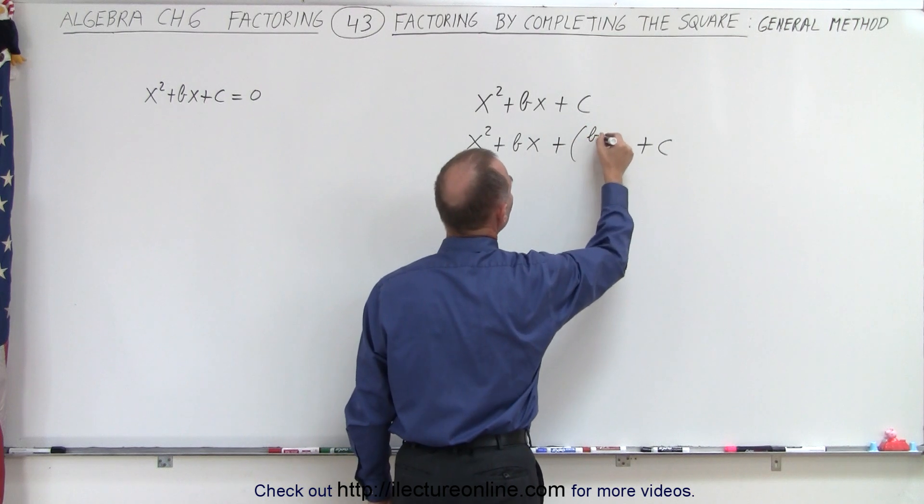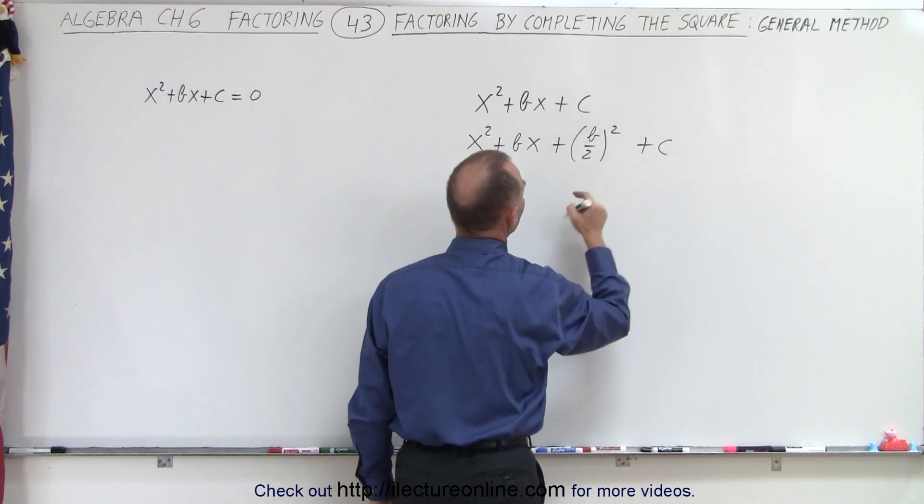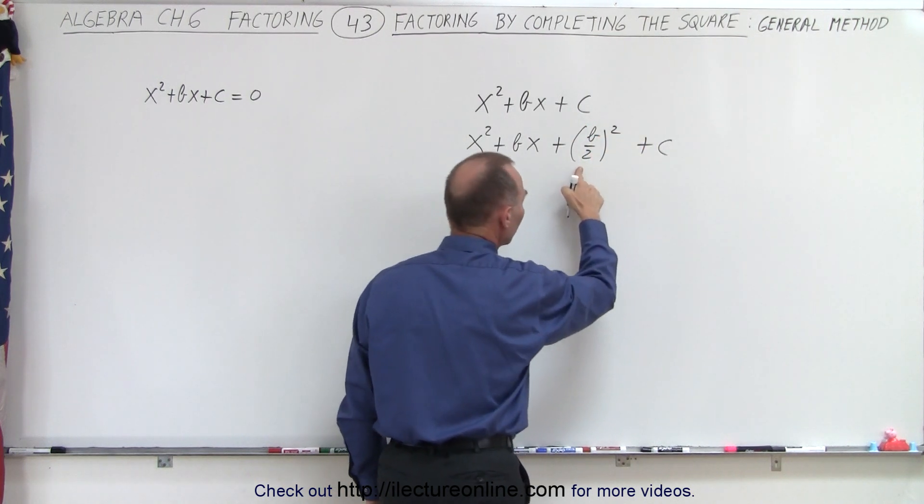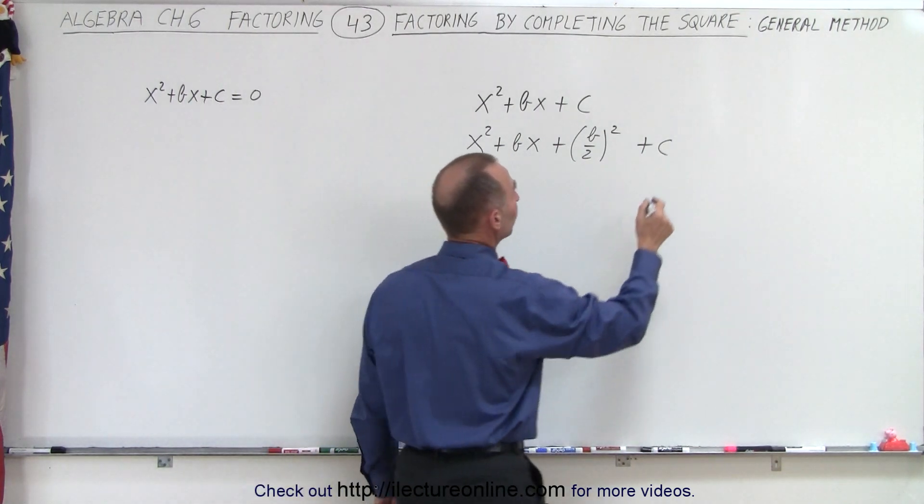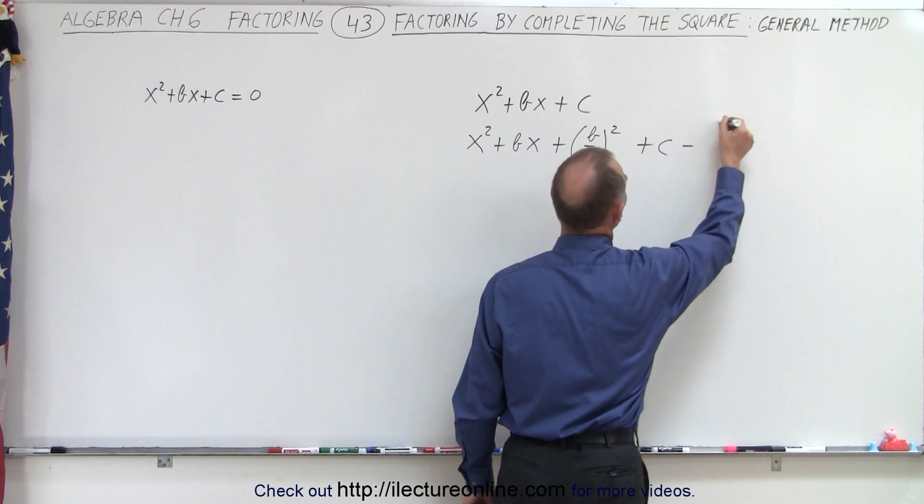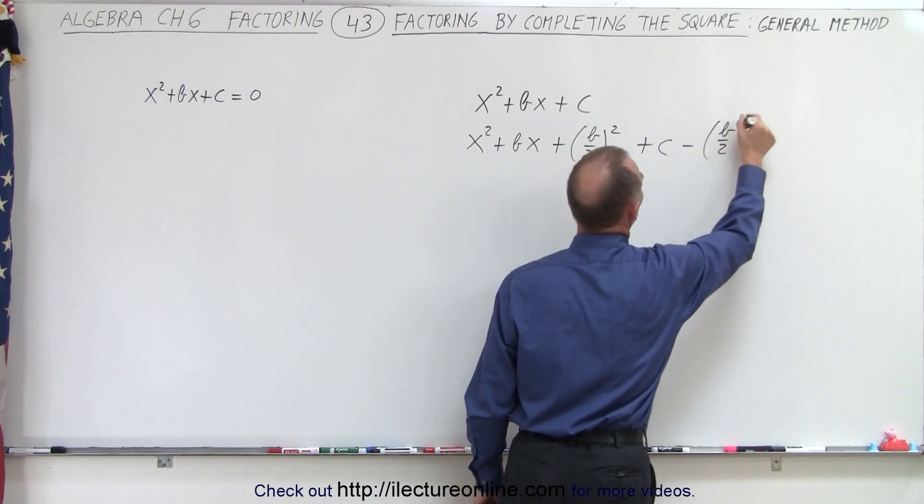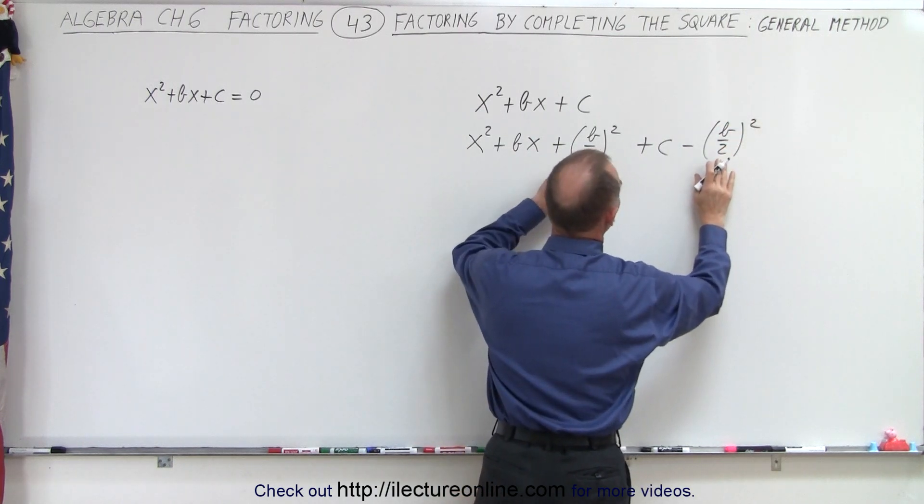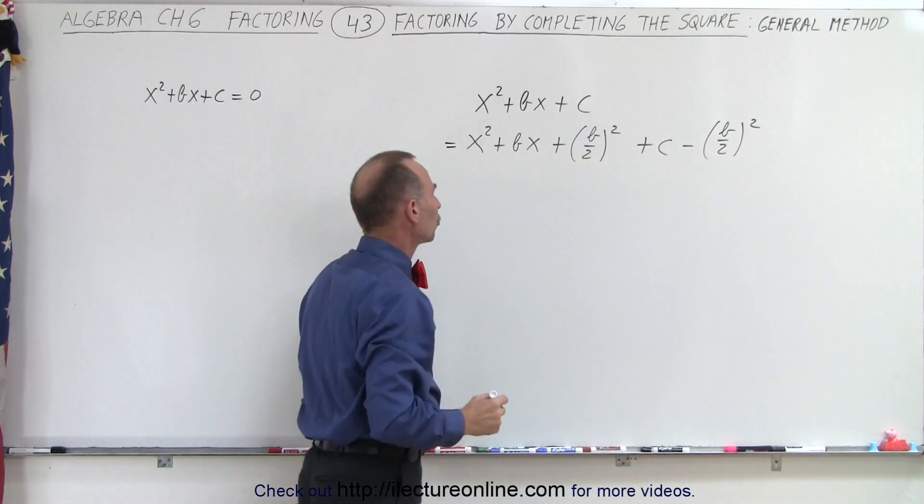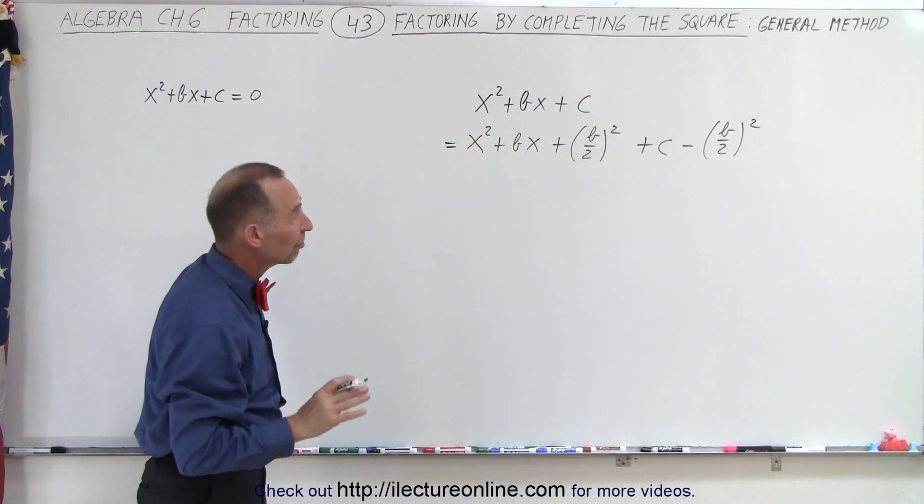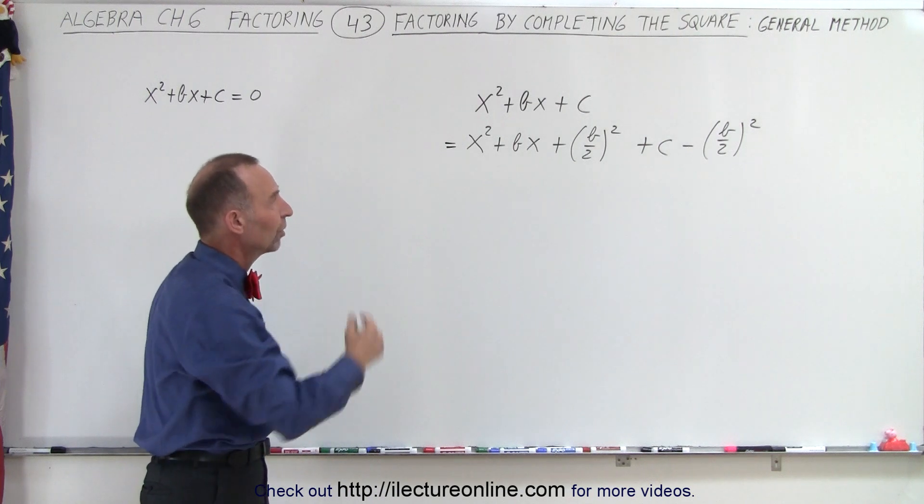Of course, when we add it, we also must subtract it, otherwise we have changed the trinomial. That means we must also write it as minus (b/2)². Notice that cancels out, we end up with the exact same initial trinomial. But we need that format in order to use this technique.